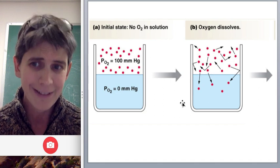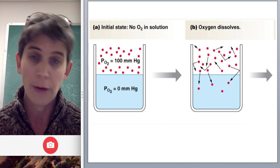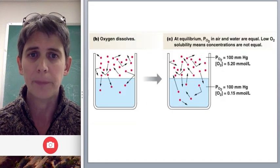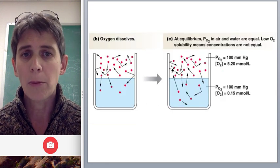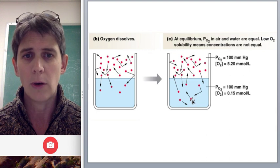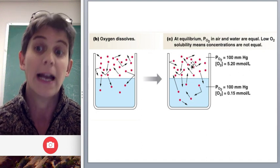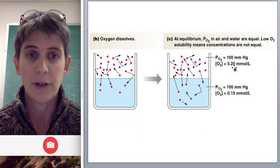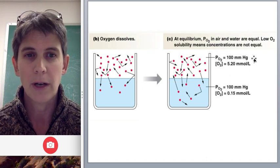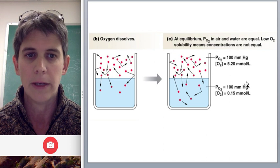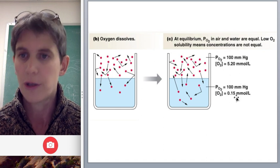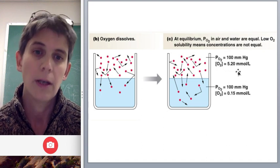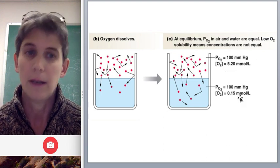Oxygen is vastly more soluble in air than in water. So once you let it come completely to equilibrium, you have far more oxygen in the air than in the water. Actually, this cartoon exaggerates the amount of oxygen that went into the water. You can see partial pressure of oxygen is 100 mmHg in these two solutions, but the concentration is much greater in the air than in the water.